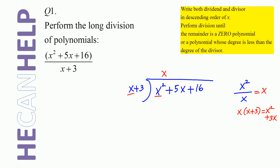x times x plus 3: what is x times x? x squared. What is x times 3? It is 3x. So you get x squared plus 3x. Subtract x squared plus 3x. And what do we get? x squared minus x squared is 0. What is 5x minus 3x? 2x. Bring down 16.